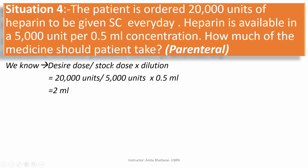Using the formula desired dose divided by stock dose multiplied by dilution: the desired dose is 20,000 units divided by the stock dose of 5,000 units. Since 5,000 units is present in 0.5 ml, we multiply by 0.5 ml, and we get 2 ml. So 2 ml of heparin should be administered to the patient.